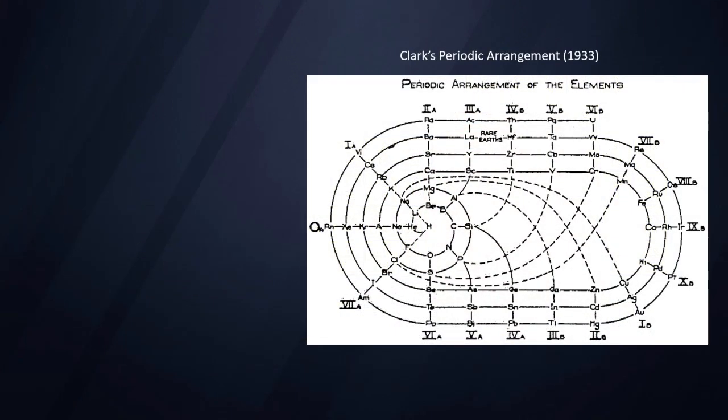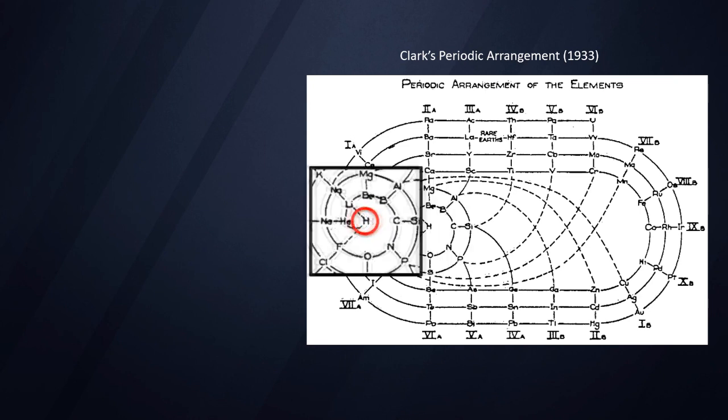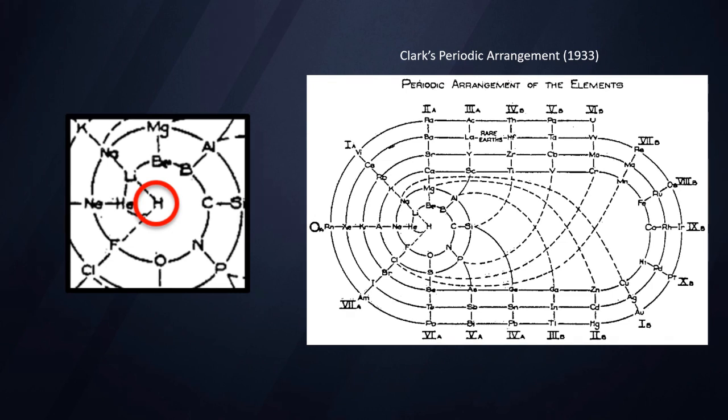Here we have an example of Clark's periodic arrangement from 1933. As you can see here, they place hydrogen directly in the center of the spiral at its origin. And not only that, but by drawing a few neatly placed dashed lines, this table also pays homage to its similarities to alkali metals and to the halogens. One might argue that the spiral periodic table is really what does justice to hydrogen's position among the elements.